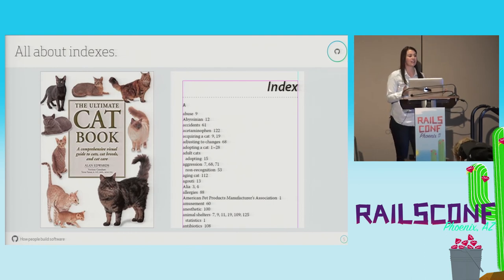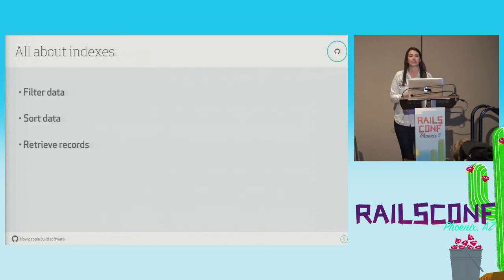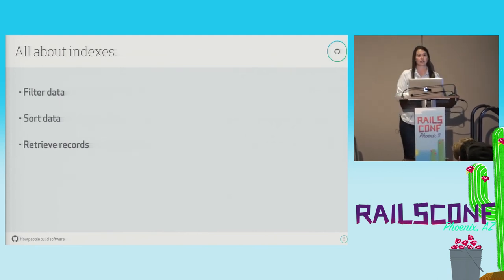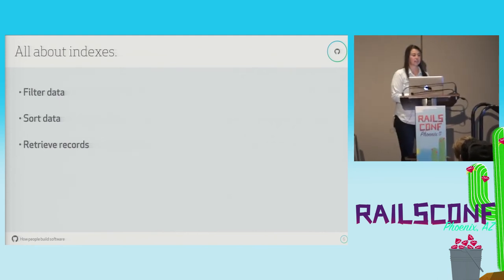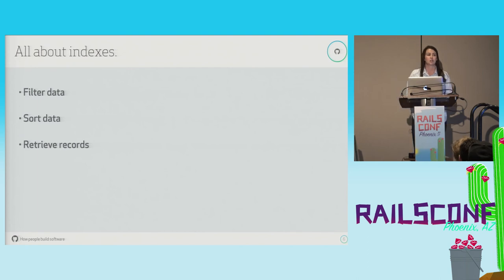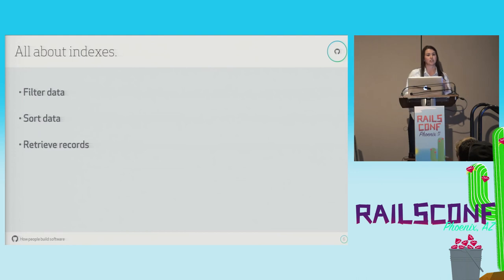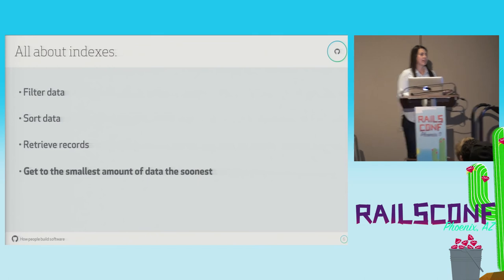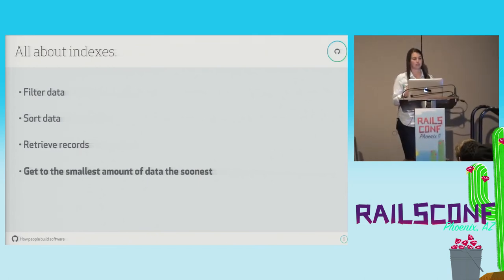On a very basic level, this is the same way that database indexes work. Indexes are used to filter data — for most queries we just want a subset of the data in our table, so we can use an index to get that information faster. Indexes can be used to sort data, since as I mentioned, indexes are sorted. Indexes can also be used to retrieve records — sometimes the index will have all the information you need and you don't have to reference back to the main table. At the end of the day, indexes give us a way to get to the smallest amount of information the soonest.